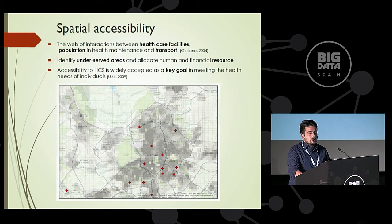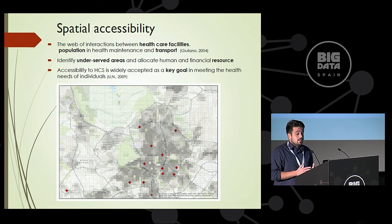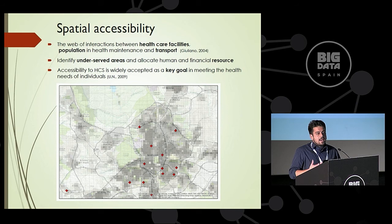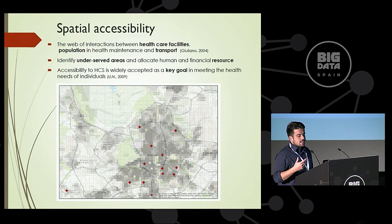What is spatial accessibility? We can define it as the potential for interaction or the ease to reach desired opportunities. In the healthcare domain, accessibility refers to the interaction between the location of people, the location of a healthcare service, and the transport system connecting the people with the services. It helps us identify areas with a shortage of physicians and healthcare services, and to allocate health and financial resources to needy areas. Accessibility is also a widely accepted key goal and a human right according to the United Nations.